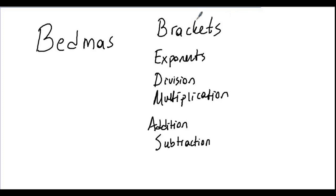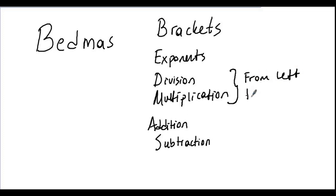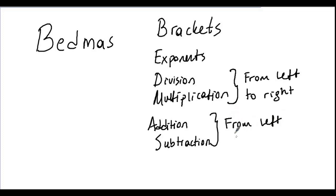When we have a mixed operation we start with the brackets first. If there are no brackets then we do exponents. After brackets and exponents, the next step is division and multiplication. If they are at the same level, we do it from left to right. We do addition and subtraction after all these, and if they are at the same level, we also do them from left to right.